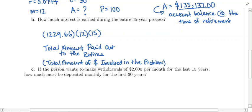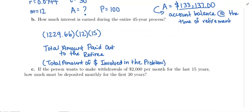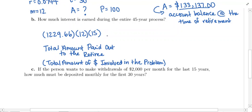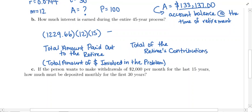Some of this is interest. This is the total amount of money paid out to the retiree — the total amount of money involved in the whole problem. All we need to do to figure out how much of it is interest is take out the total of the retiree's contributions. During the savings phase, they made contributions to the account. They put in $100 every month for 30 years, so their contributions totaled 100 times 12 times 30. If we subtract these two numbers — the total amount of money involved minus what the person actually contributed — that gives us the total amount of interest.